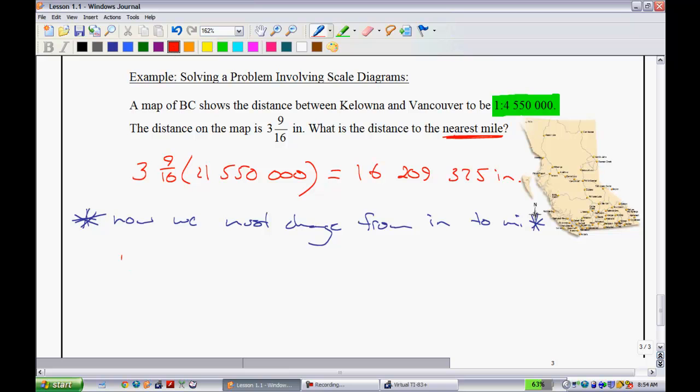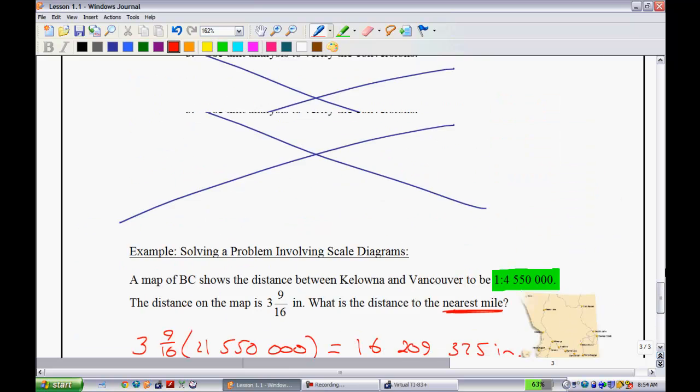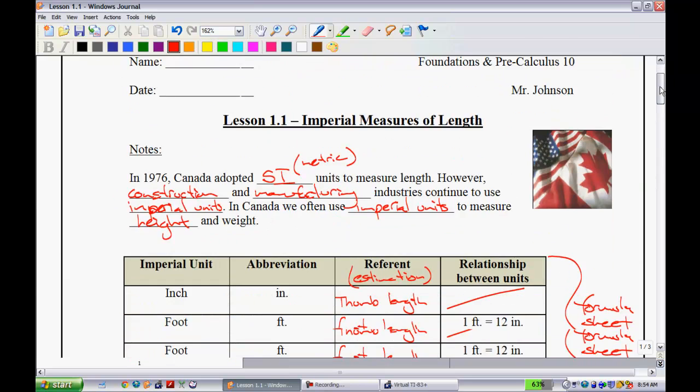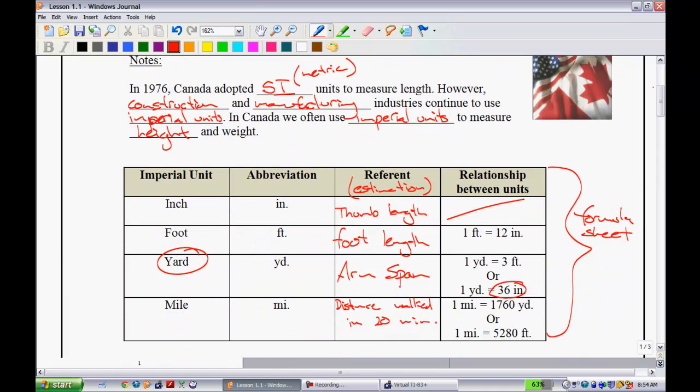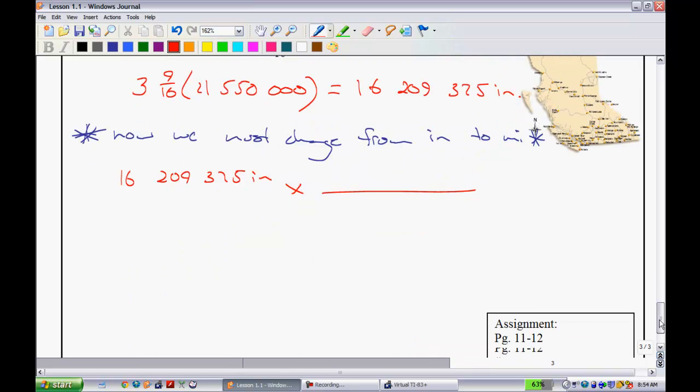So let's do this. 16,209,375 inches. Now, if we're getting rid of inches and we want to get to miles, well, let's take a look. Let's come back up here to that chart. Is there a way to go from straight inches to miles? Well, notice how they don't have anything there. So we're going to have to do two different conversions.